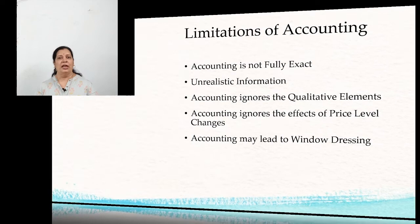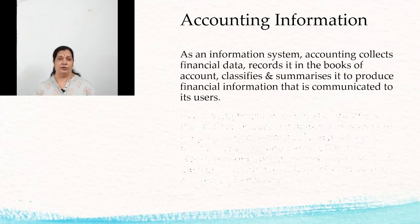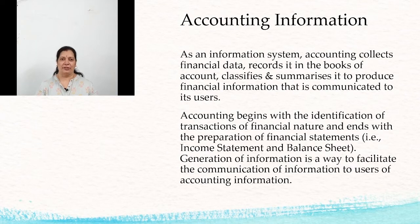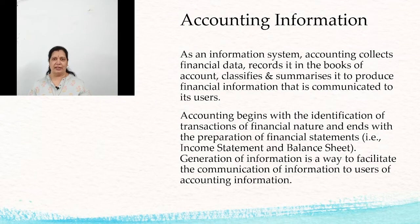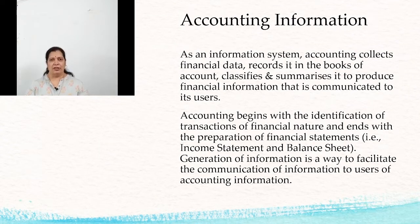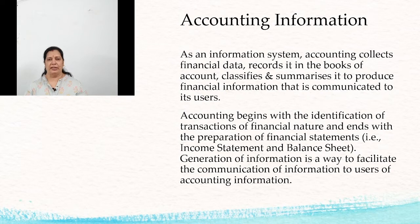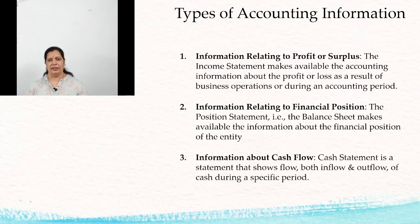Due to window dressing, we are not able to know the real or correct position of assets and liabilities. As an information system, accounting records all the business transactions, classifies them, and produces financial statements communicated to users. Accounting begins with the identification of business transactions and ends with the preparation of financial statements — the income statement, which shows profit and loss, and the balance sheet, which shows the position of assets and liabilities.